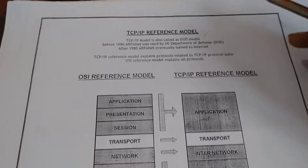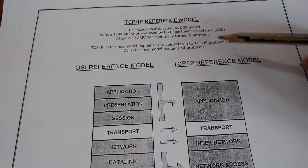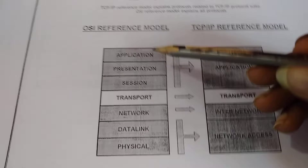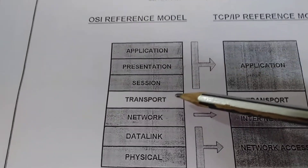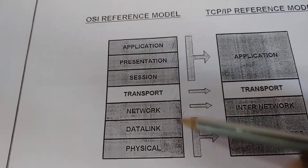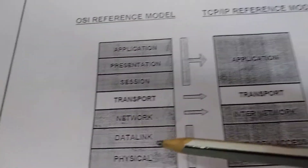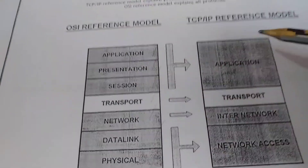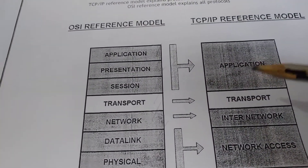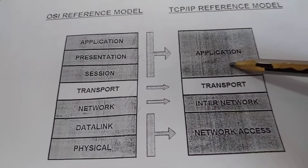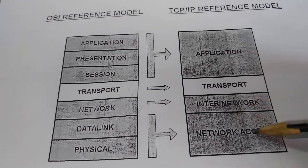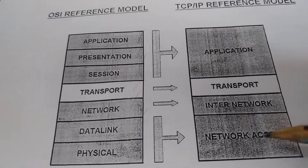TCP/IP reference model versus OSI reference model: the OSI model has seven layers — application, presentation, session, transport, network, data link, and physical. The TCP/IP model maps these to four layers: application, transport, internet (network layer), and network access.